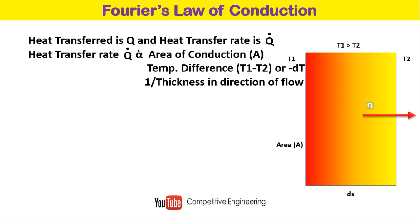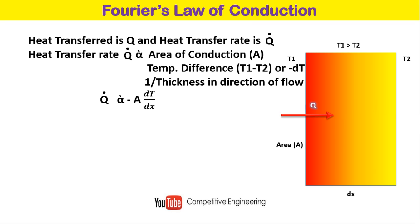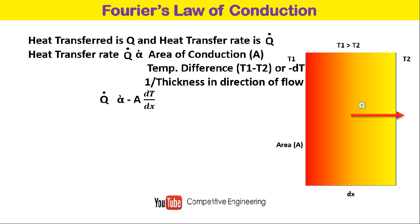Mathematically, Q dot is equal to minus A times dT/dx, where A is the area of cross section and dT/dx is called the temperature gradient along the thickness. So Q dot is proportional to the temperature gradient dT/dx.